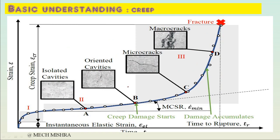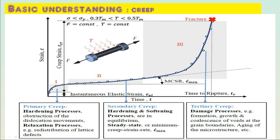Consider a material exposed to a higher temperature with a permanent constant load applied — so there is constant strain and constant applied load. This is a strain versus time curve. Creep happens in three stages: the first is primary creep, the second is secondary creep, and the third is tertiary creep.